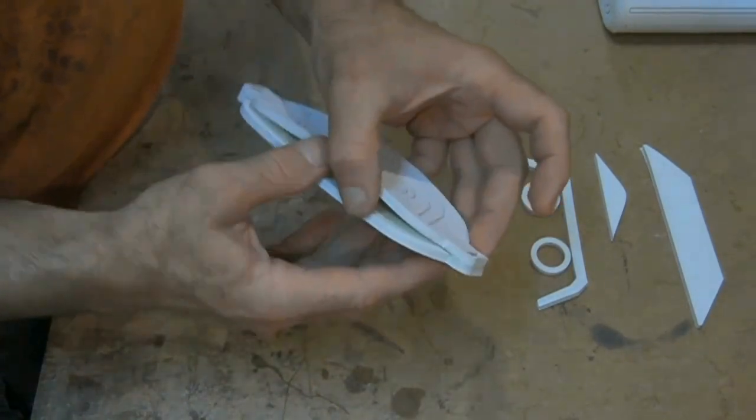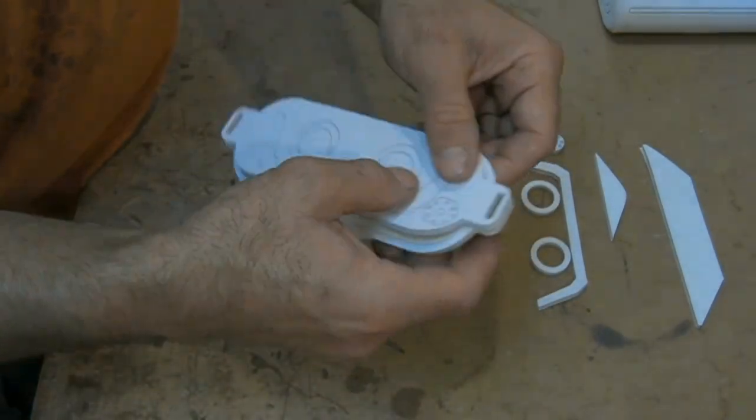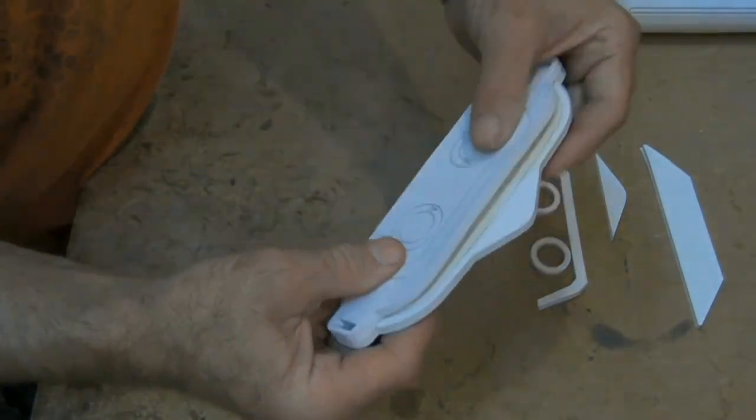Once your tabs are lined up press the two pieces together working your way down one edge and working your way up to the top.